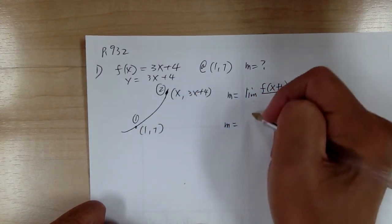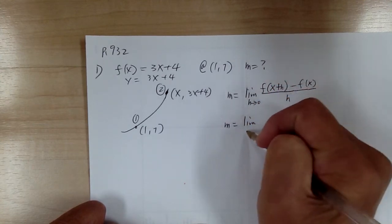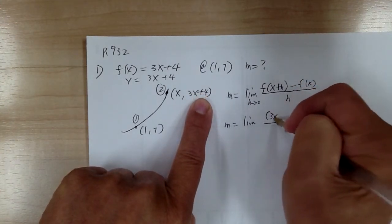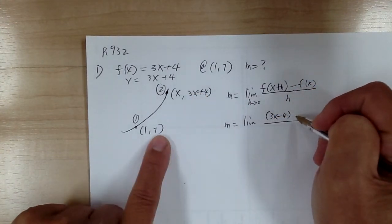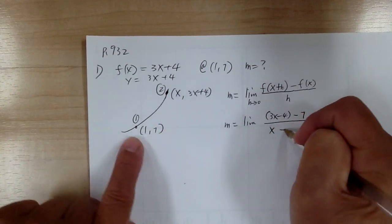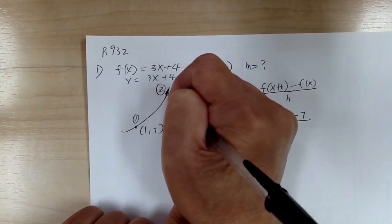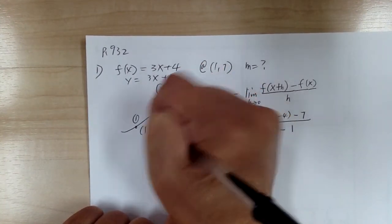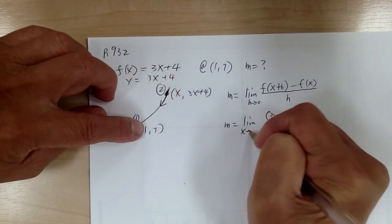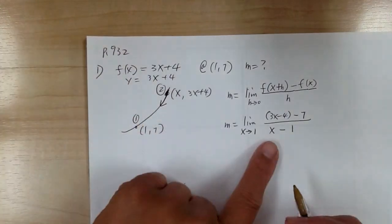Another way to write this — slope equals y2, that's 3x plus 4, that's y2 minus y1 over x2 minus x1. You want to take the limit as this point approaches that point. So that means x approaches to 1. So x is going to get close and close to 1.